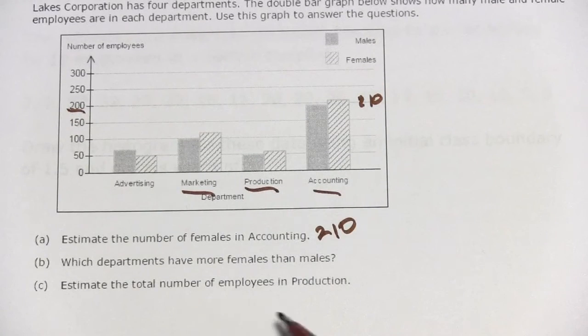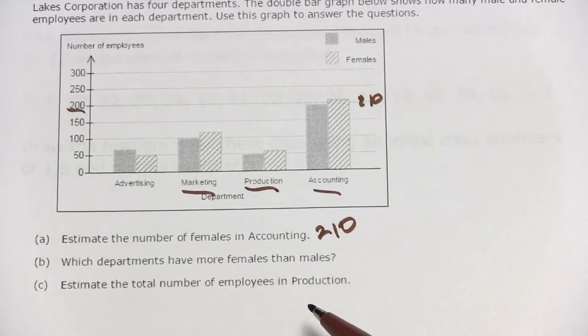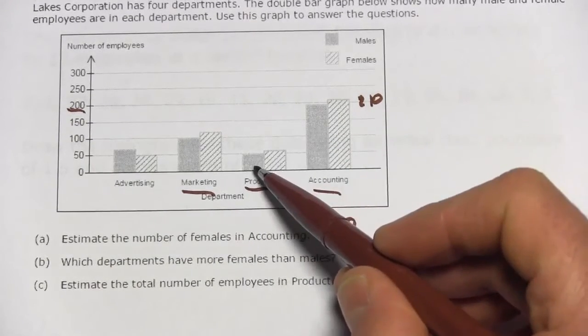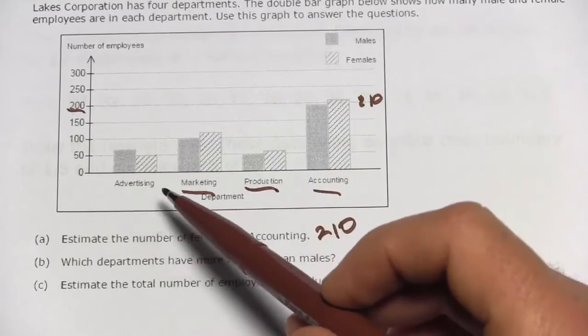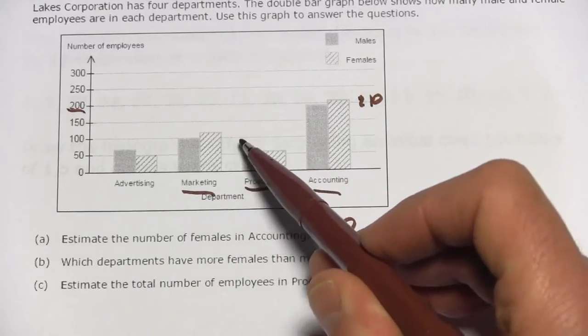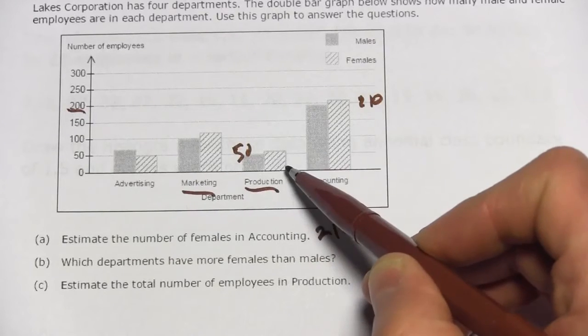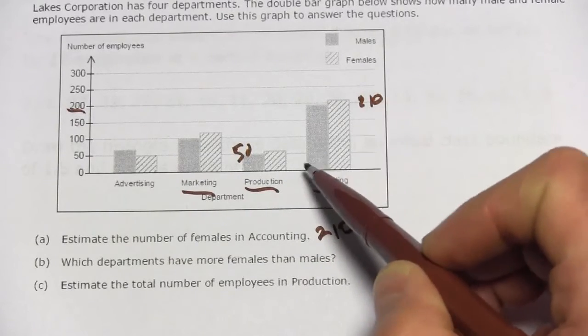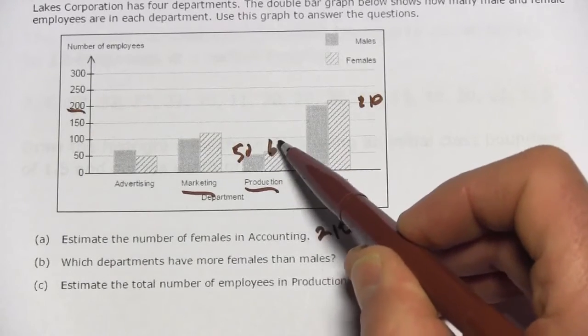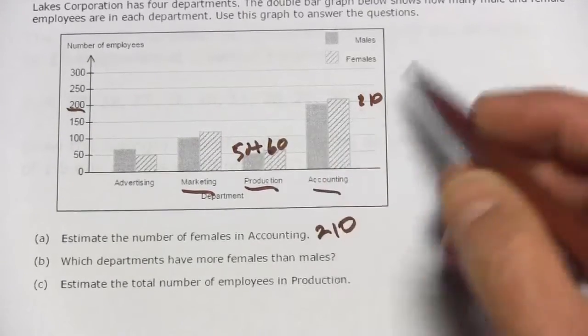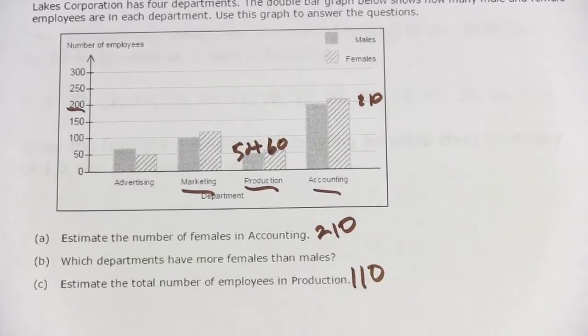Question C says, Estimate the total number of employees in production. Here's production, and we want to add the males and the females together to get the total number. It looks like males is just at 50. Females is a little bit over. It looks like just as much over as that other one was. I'm going to call that 50 plus 10, or 60. So 50 plus 60 would be 110 employees.